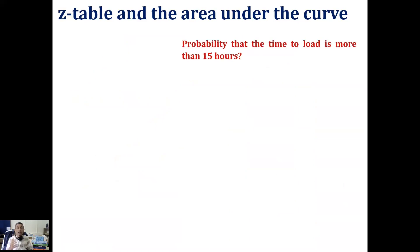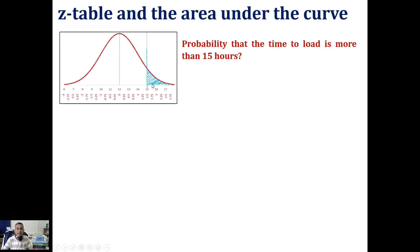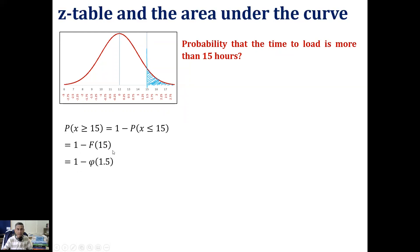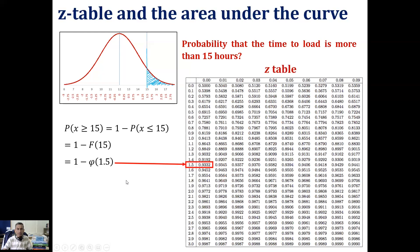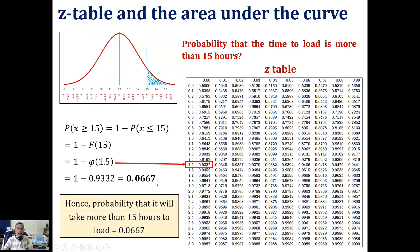For part (c), the probability that loading takes more than 15 hours is the area to the right of x = 15. P(x ≥ 15) = 1 - P(x ≤ 15) = 1 - F(15) = 1 - Φ(1.5). From the z table, Φ(1.5) = 0.9332. Therefore, P(x ≥ 15) = 1 - 0.9332 = 0.0667. So the probability that loading takes more than 15 hours is 0.0667.